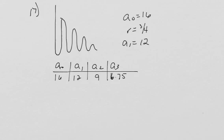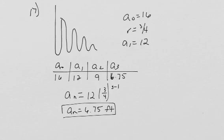Alternatively, what we could do is use our equation. So A of N equals 12, so we're using A of 1, 3 fourths, which is our R, to the power of 3 minus 1, and plugging that into our calculator, we get that A of 3, the height after the third bounce is 6.75 feet.